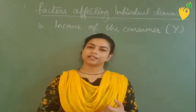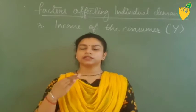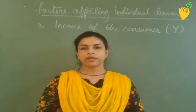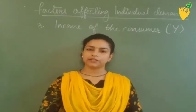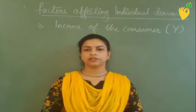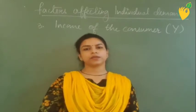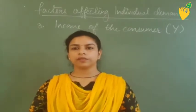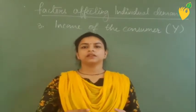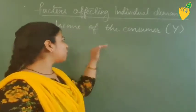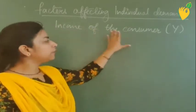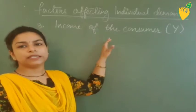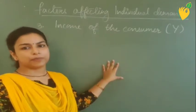Keeping other factors constant means that price of the commodity will be constant, price of related goods will be constant, future expectations of change in price will be constant, and taste and preference of the consumer will be constant. So everything apart from income of the consumer will be constant — then only it will be applicable.